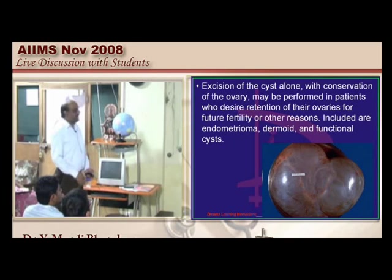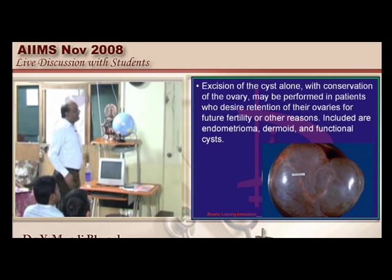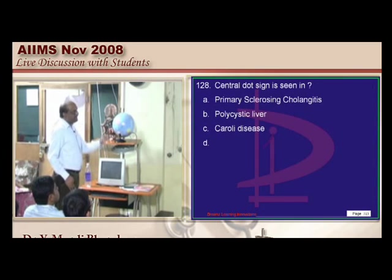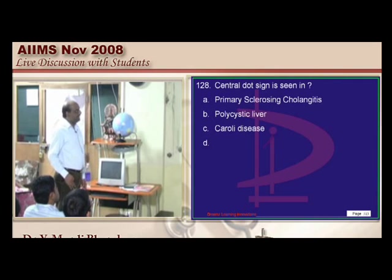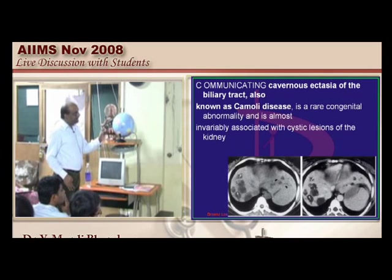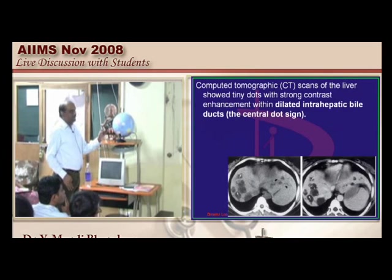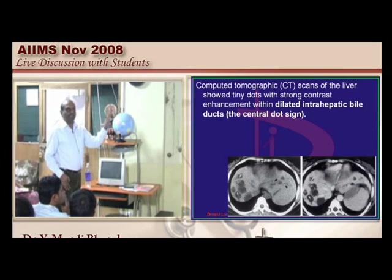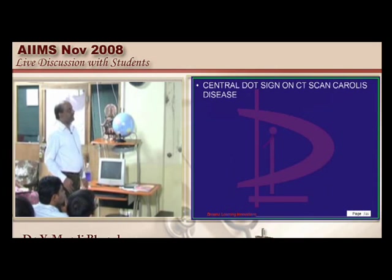The central dot sign is seen in Caroli's disease, a communicating cavernous ectasia of the biliary tract. On CT scan of a Caroli's disease patient, dilated intrahepatic bile ducts appear as centrally placed dots on the liver.